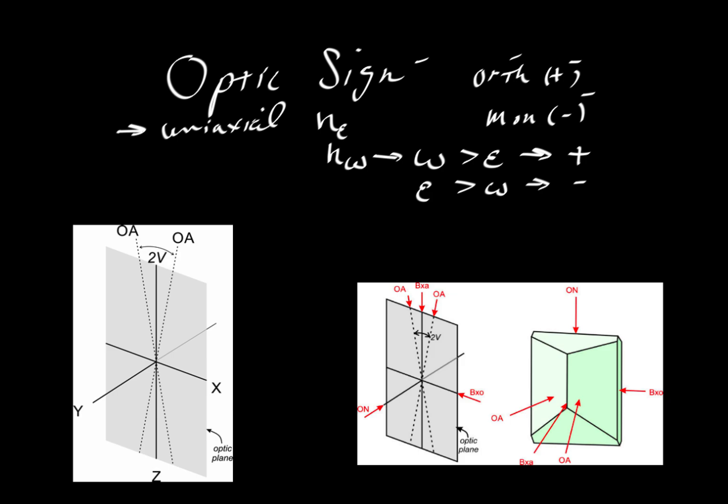With biaxial minerals, it's a little different. Here we have the optic axes and the 2V angle that represents the angle between those optic axes. And then we have these crystallographic directions: x, y, and z.